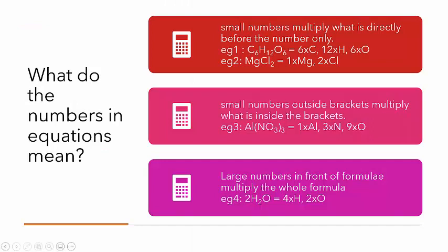First of all we need to revise what the numbers actually mean in a chemical equation. The first type of numbers that you get in a chemical equation are the numbers that are actually part of the formula — they're the small numbers that are part of the chemical formula.